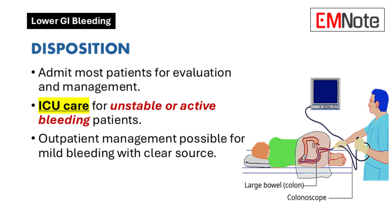Patients with significant lower gastrointestinal bleeding often require hospital admission and endoscopic evaluation. Those who are hemodynamically unstable or actively bleeding may need intensive care unit admission. In contrast, individuals with mild bleeding from an identifiable source such as hemorrhoids, and without hemodynamic instability or major comorbidities, may be candidates for outpatient management.